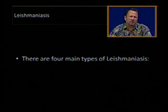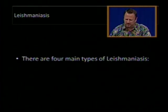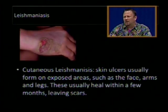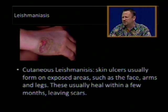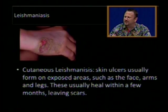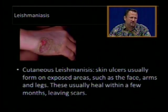There are four major types of leishmaniasis. Cutaneous leishmaniasis results in skin ulcers. These usually form on exposed areas such as the face, arms, and legs, and usually heal within a few months, leaving scars.